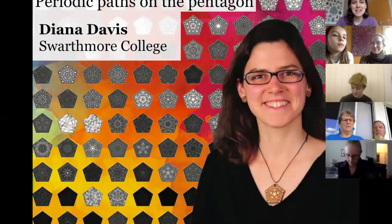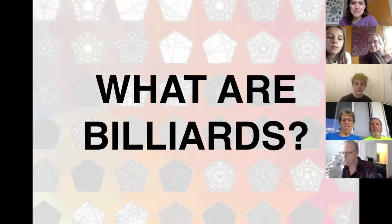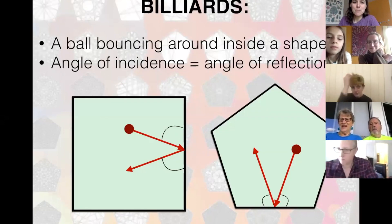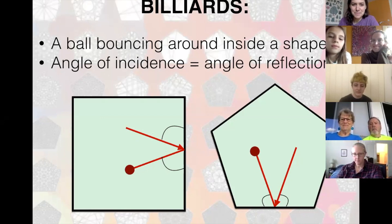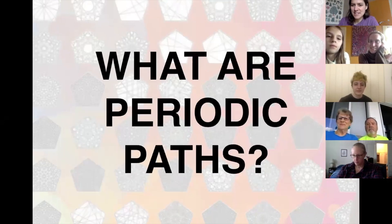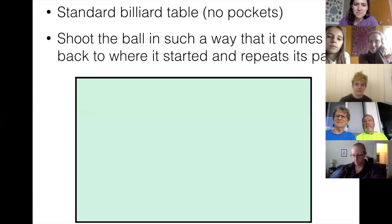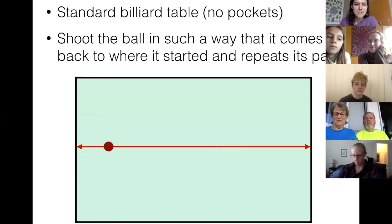We're going to talk about billiards. Billiards is a ball bouncing around inside a shape — you can see it bouncing. I studied billiards on any kind of shape; I'll talk about squares, pentagons, and other shapes. I studied particularly periodic paths, where you have a billiard table — which could be a rectangle — and you shoot the ball so that it comes back to where it starts and repeats.